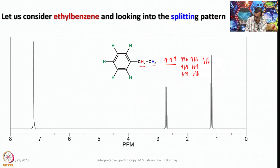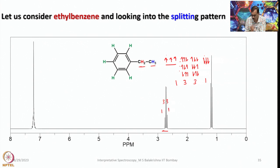When they are aligned with the applied magnetic field it is deshielded, and when opposing it is shielded. The four peaks appear in that order, and the intensities are 1:3:3:1. Similarly, for CH2 coupling to CH3, two protons give three possibilities — both up, one up one down, or both down — giving a 1:2:1 triplet.